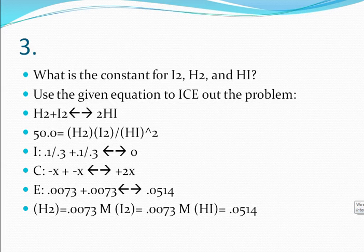For the concentrations you have minus x and minus x for both H2 and I2 and you have a positive 2x for the 2HI. So for the final equilibrium you get out 0.0073 and 0.0073 for both H2 and I2 and for 2HI you get out 0.0514.